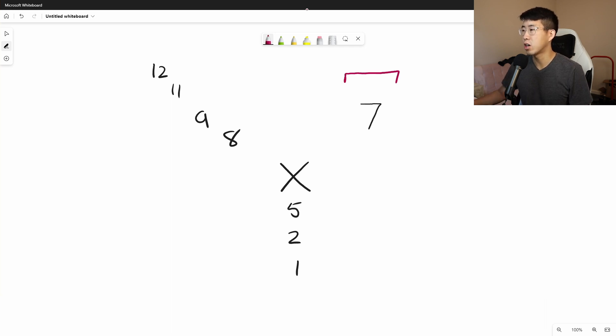This right here is called your extrinsic pathway, and it's going to affect your PT time. And then this right here is called your intrinsic pathway, and it is going to be affecting your PTT.